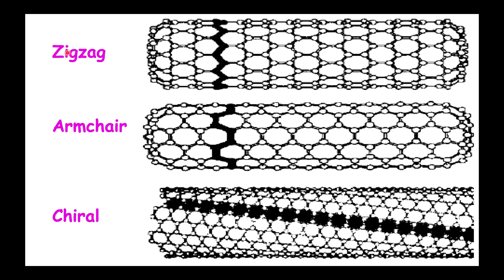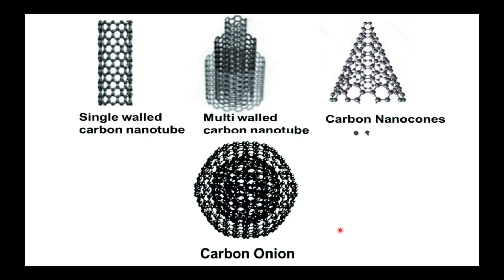There are three types of carbon nanotube structures: zigzag, armchair, and chiral. As indicated by their names — in the zigzag type we can see the zigzag structure. The chiral structure is a mirror-image arrangement, which is called the chiral structure.